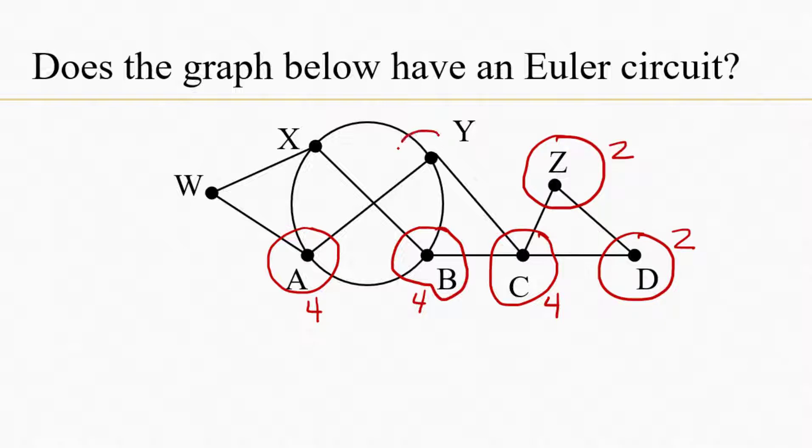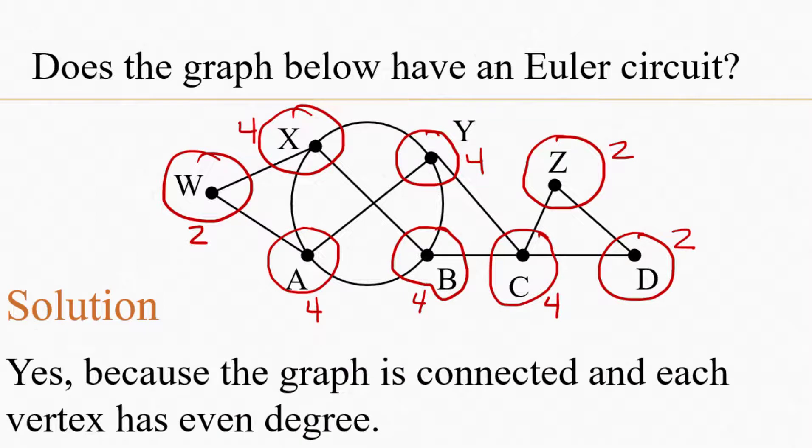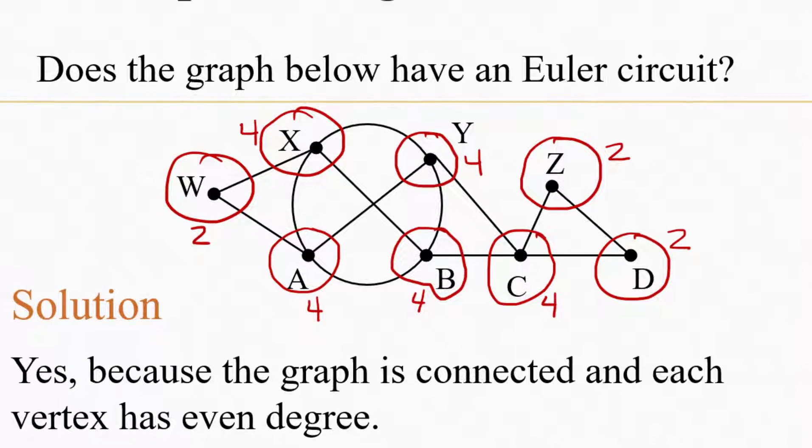Z has degree two. Looks like Y has degree four. Looks like X has degree four. And W has degree two. So yes, every single one of these vertices has even degree. So according to Euler's theorem, since it's a connected graph with even degrees for all the vertices, it does have an Euler circuit.